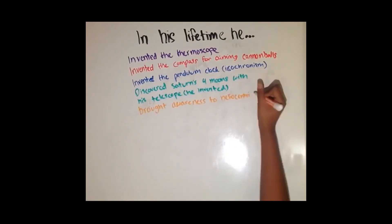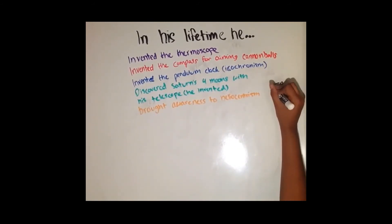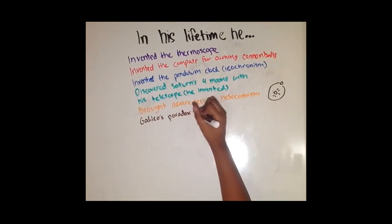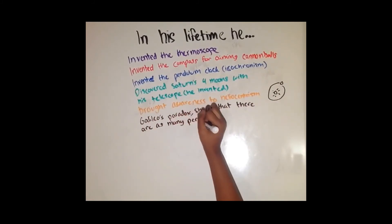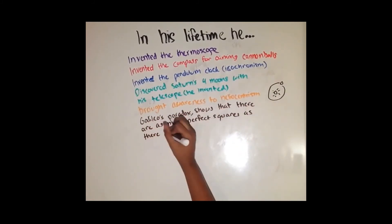He brought awareness to heliocentrism, the idea that the sun did not move while the earth revolved around it. He also discovered Galileo's paradox that shows that there are as many perfect squares as there are whole numbers.